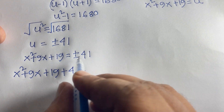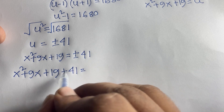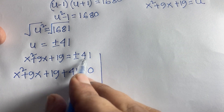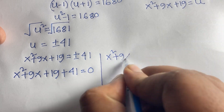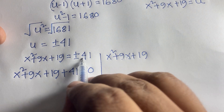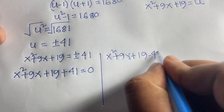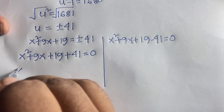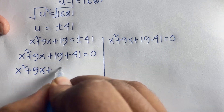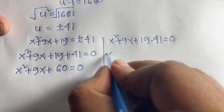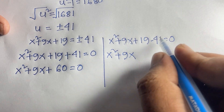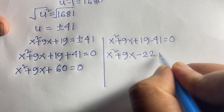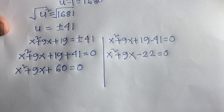For Case 1 (positive): x²+9x+19 - 41 = 0, which gives x²+9x - 22 = 0. For Case 2 (negative): x²+9x+19 + 41 = 0, which gives x²+9x + 60 = 0.